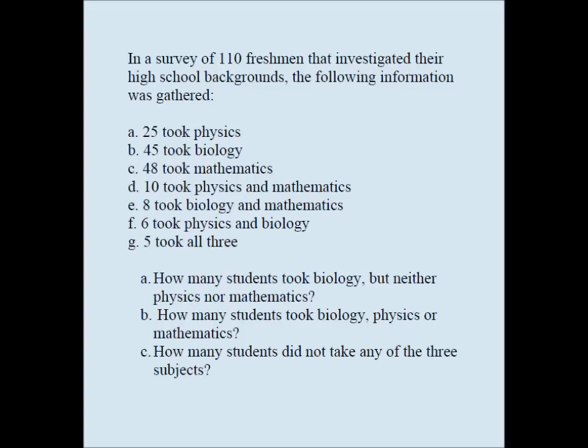10 took physics and mathematics, 8 took biology and mathematics, 6 took physics and biology, 5 took all three. We need to answer these questions: how many students took biology but neither physics nor mathematics? How many students took biology, physics, or mathematics? How many students did not take any of the three subjects?